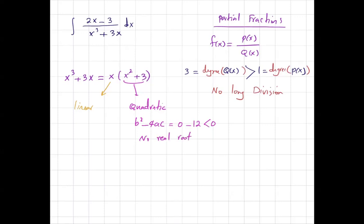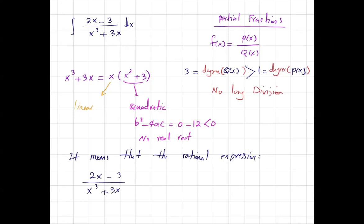So what's the meaning of that? It means that the rational expression 2x minus 3 divided by x cubed plus 3x can be written as the first fraction belonging to the linear part, which is A divided by x, plus the second fraction belonging to the quadratic expression, which is Ex plus F divided by x squared plus 3.